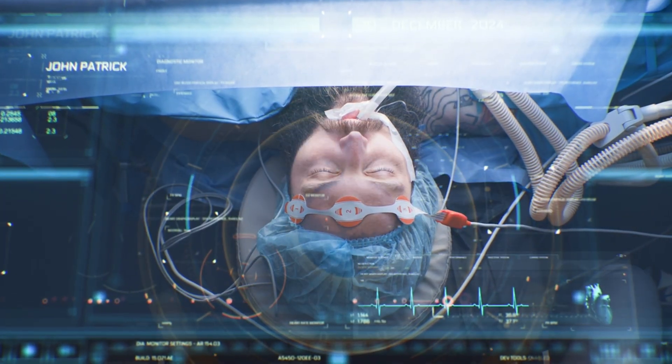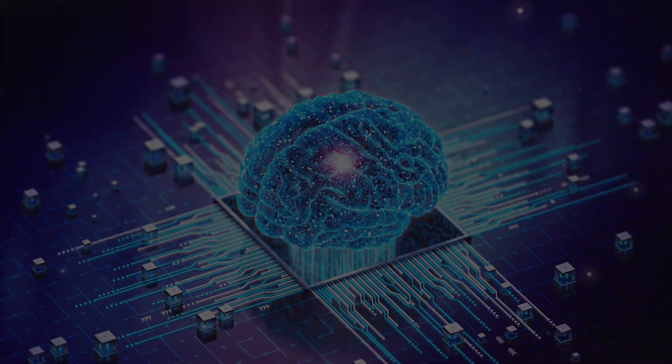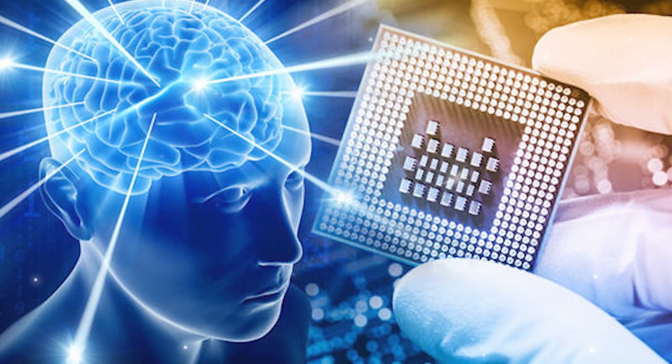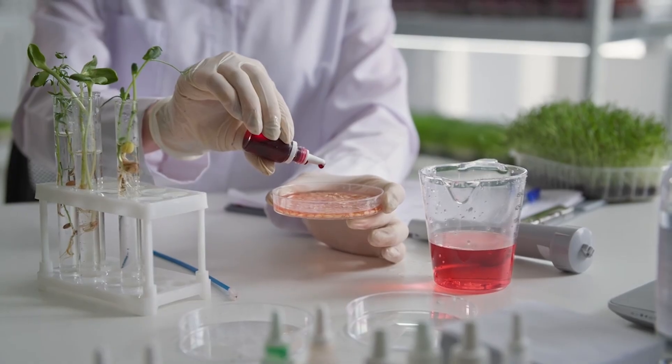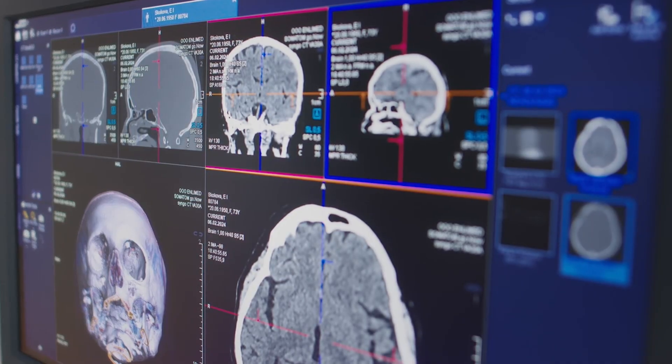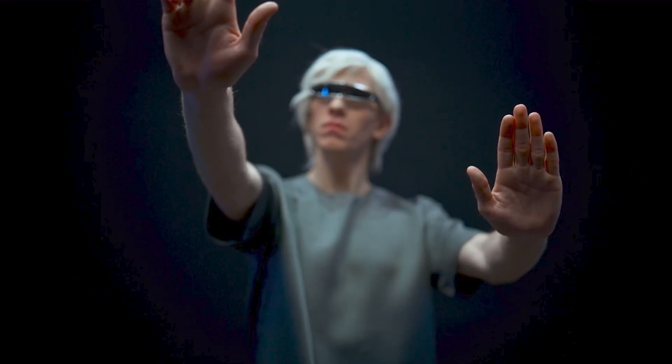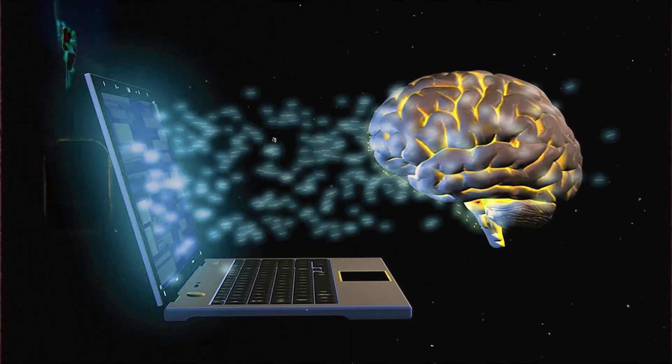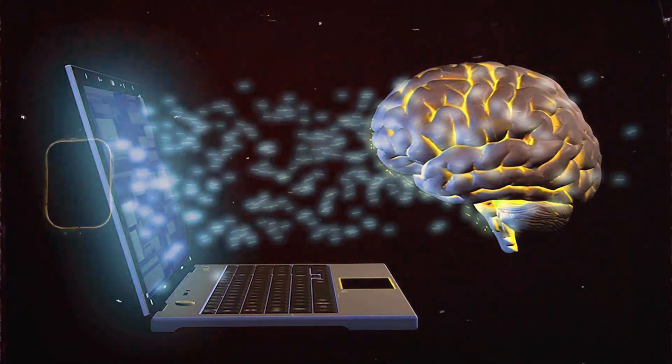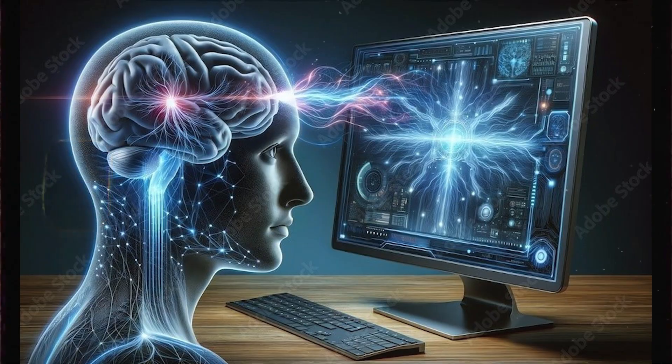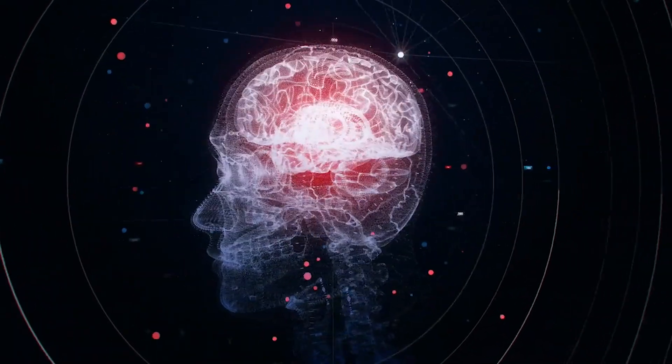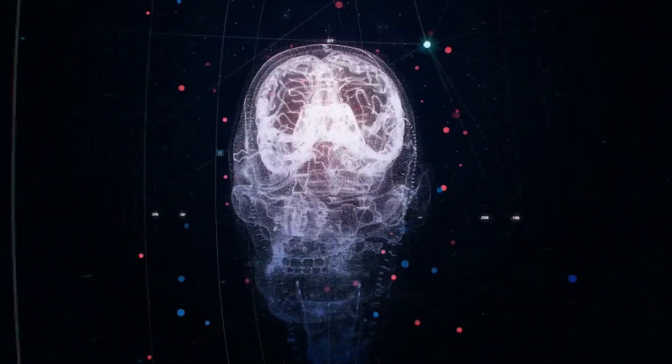No one knows exactly how the brain will react over time, or whether the chip will remain safe and functional inside the human body for years to come. And the concerns go far beyond medicine. If the brain can send signals to a computer, the reverse may one day be possible too, raising urgent questions about privacy and mental autonomy. If Neuralink can read your thoughts, who controls that data? Could your inner feelings be monitored, manipulated, or even hacked?